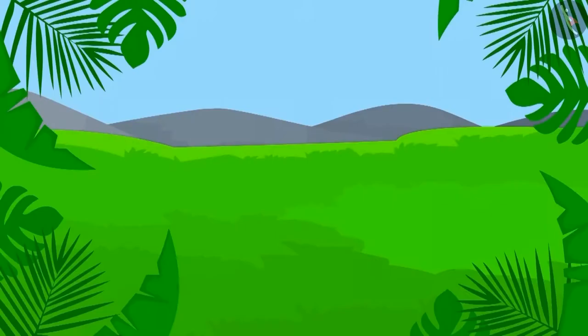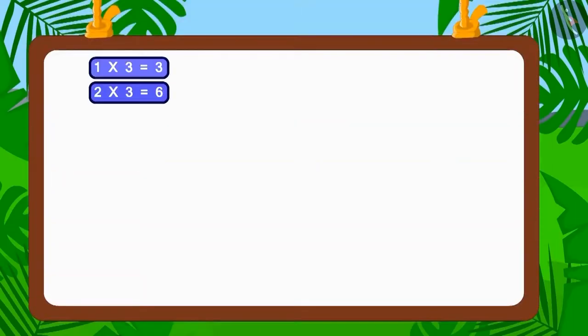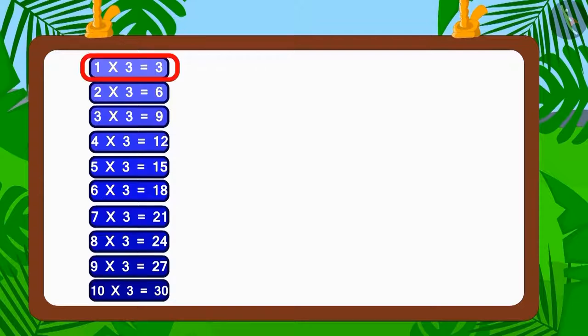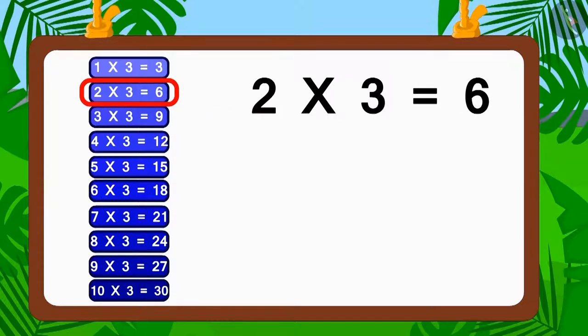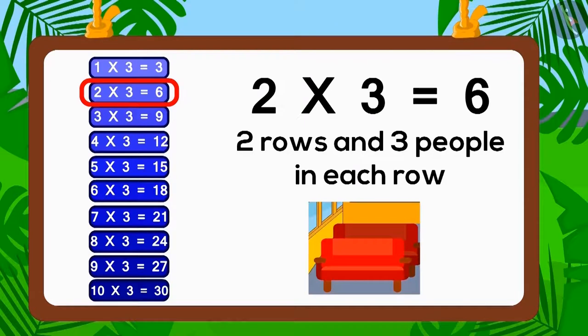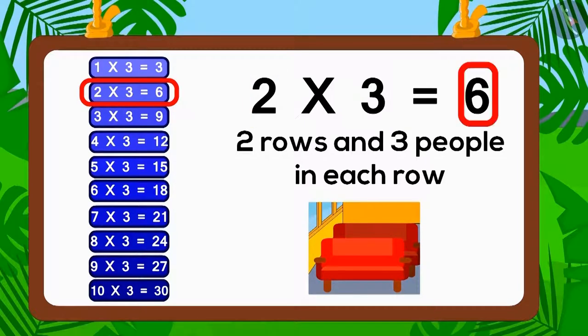Now, let's look at the table of three. Does the number six appear in the table of three? Two multiplied by three is six. Therefore, three is the factor of six. So, if three people sit in each of two rows, how many people in total would be sitting on the bus? Six.